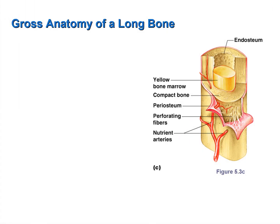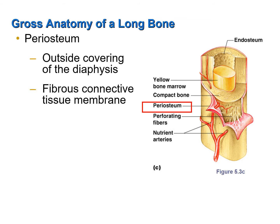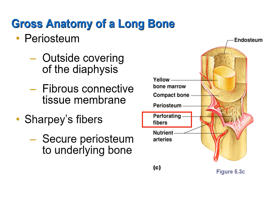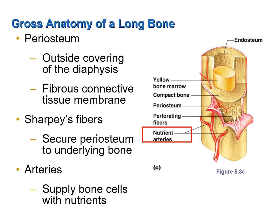The diaphysis is surrounded or covered by the periosteum, which is a connective tissue membrane. The periosteum is secured to the compact bone by little Sharpey's or perforating fibers. Bone is an organ — it contains osseous tissue, which is living tissue and therefore contains cells. These cells need a blood supply, so there are various nutrient arteries that extend into the bone to provide nutrients, oxygen, and other substances, and also to remove carbon dioxide and other waste products.